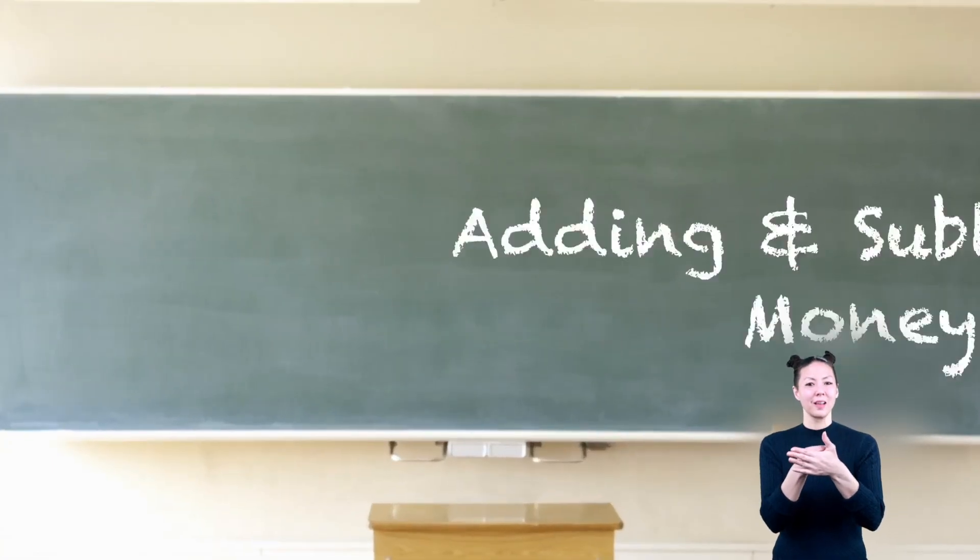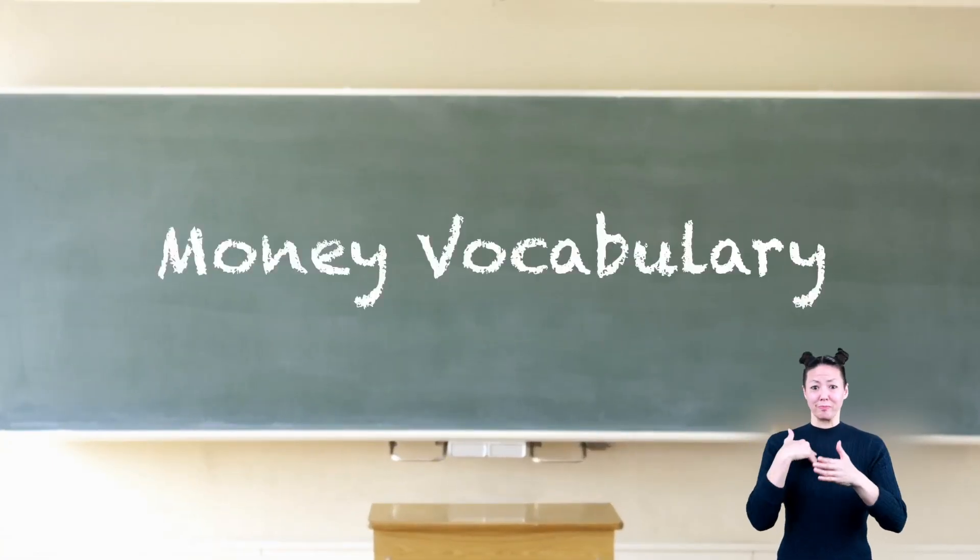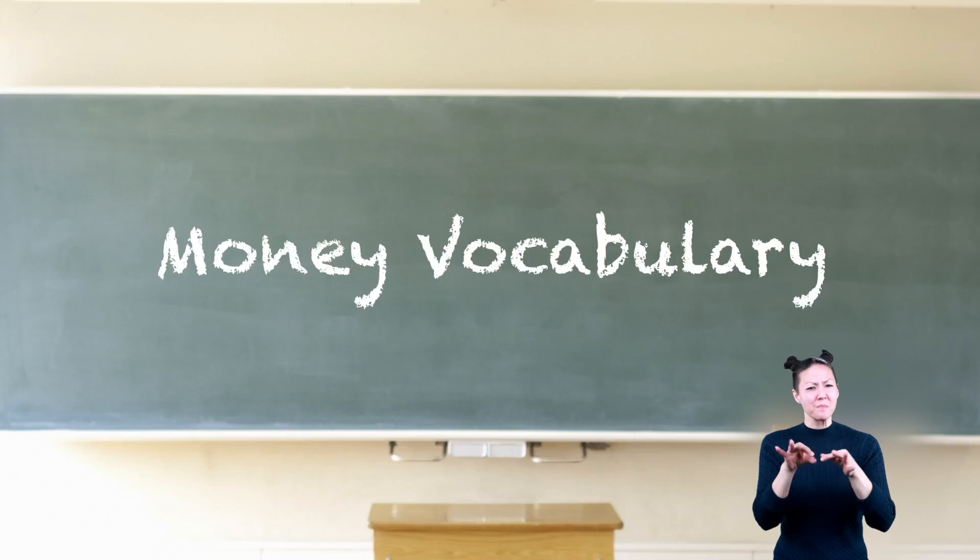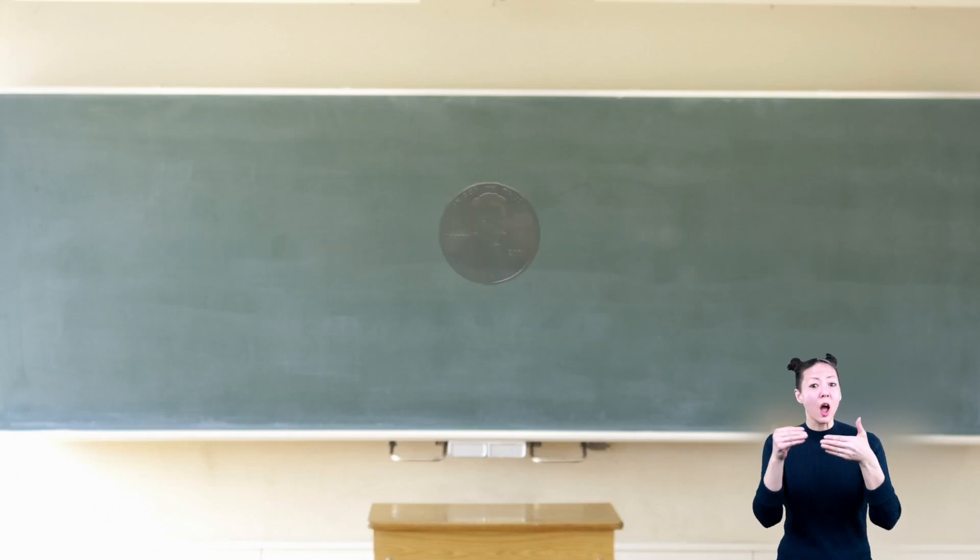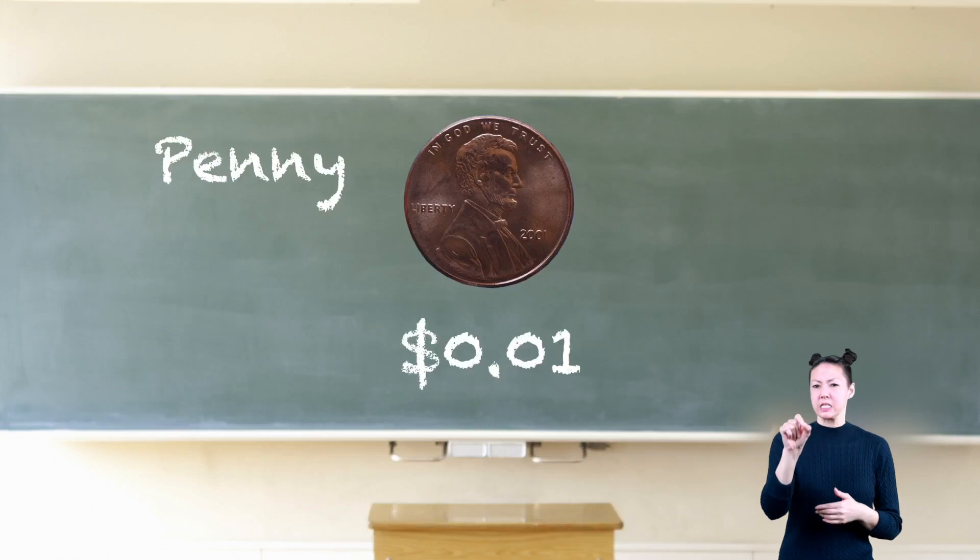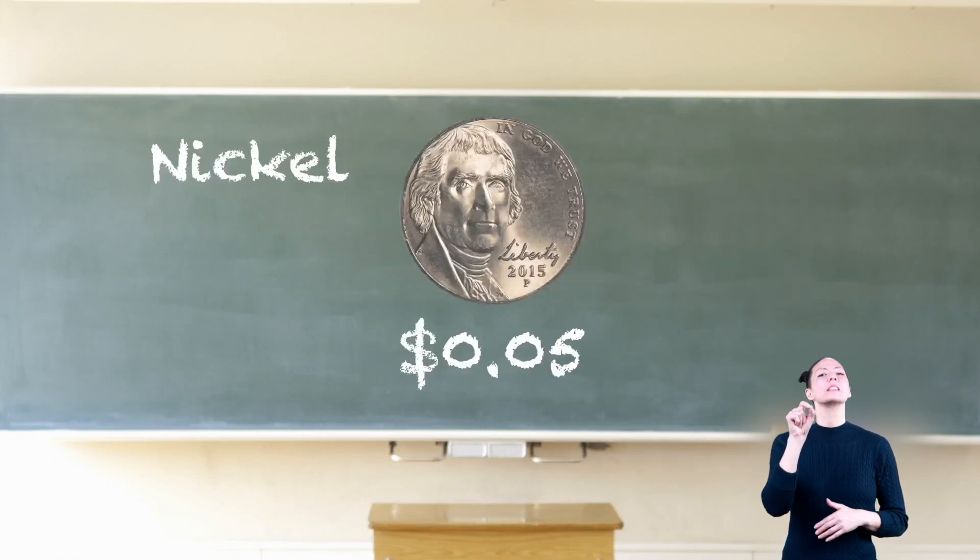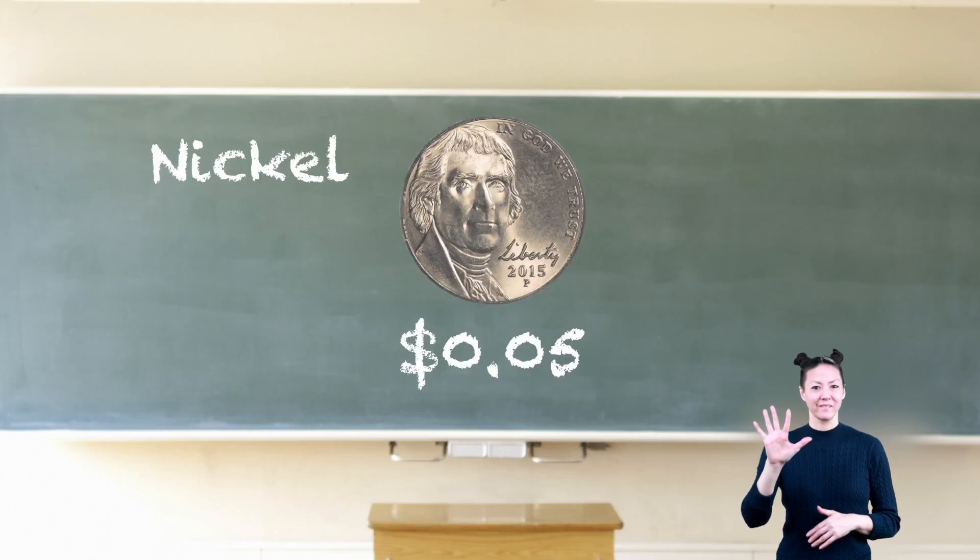Adding and subtracting money. Money vocabulary. Before we can begin adding and subtracting money, it's important to know the value and decimal for each coin and dollar amount. Here is a penny. The decimal amount is 0.01. Here's a nickel. Its decimal amount is 0.05 or five cents.